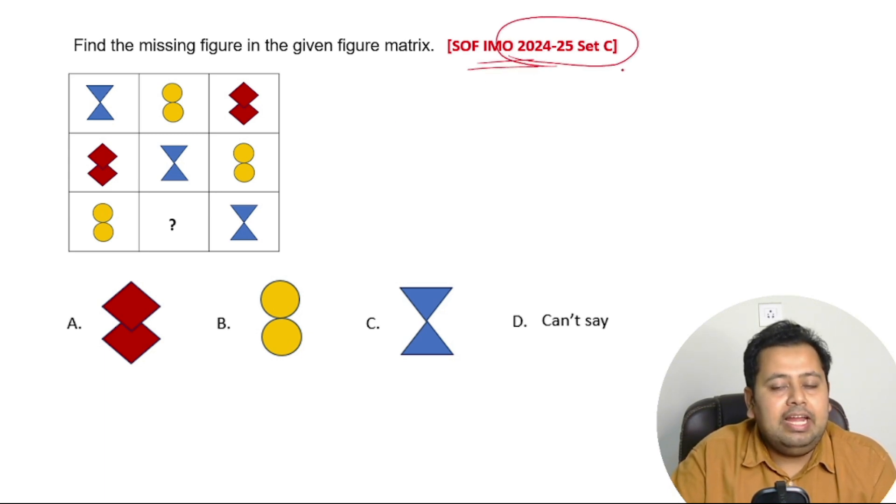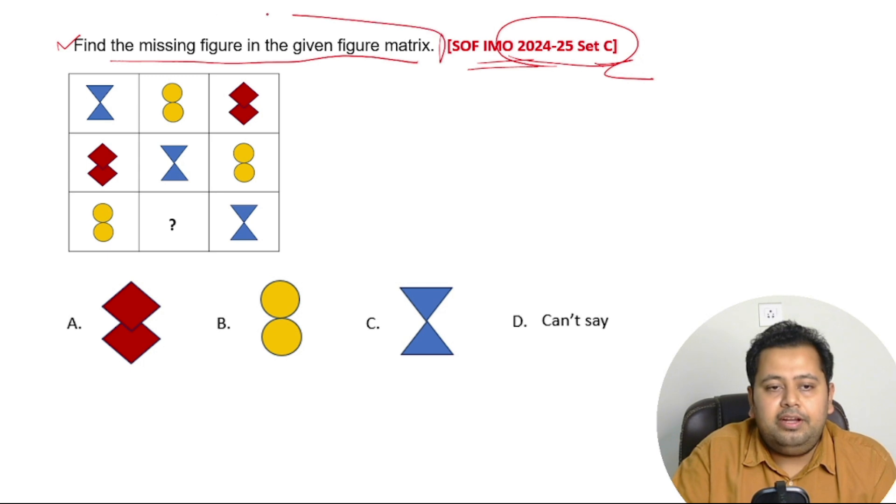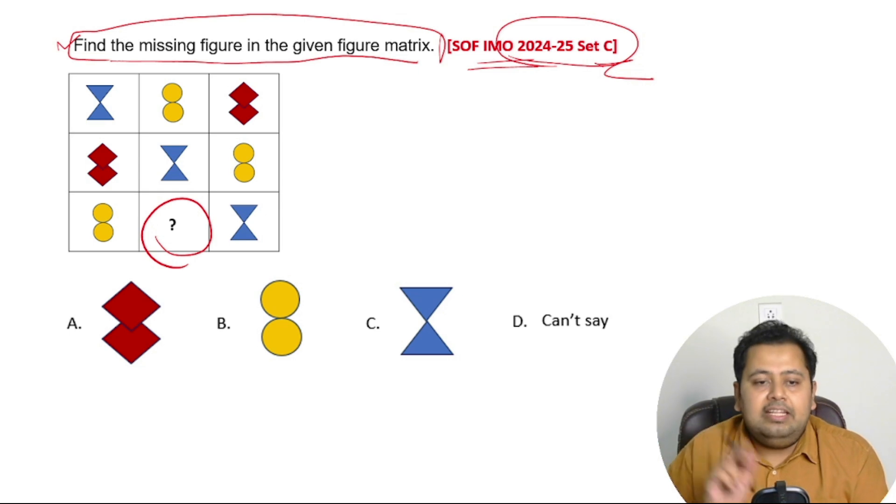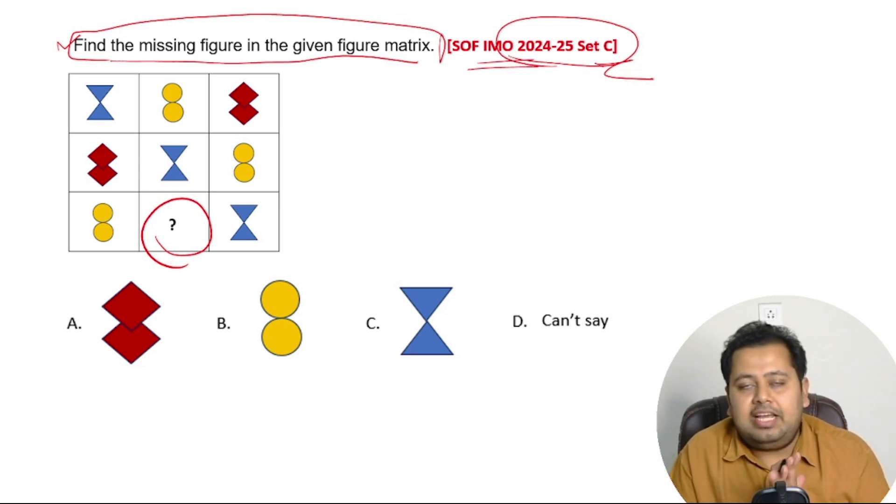This question was asked in IMO Mathematical Olympiad 2024-25 in Set C. What it's asking you to do is find the missing figure in the given figure matrix. You have to find what figure should come here. You have been given four options. So take five seconds, solve it, we'll get back after five seconds.